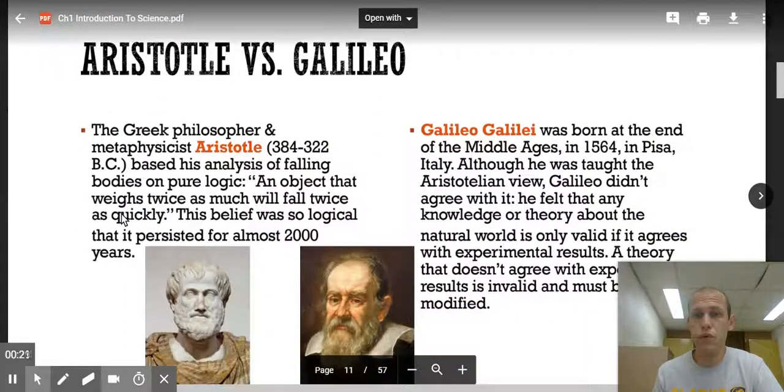Before we get into the scientific method, a little background on two people, Aristotle and Galileo. Aristotle was a Greek philosopher and metaphysicist, someone who studied the tiny workings of things, the most basic workings of the world. His analysis was based on only logic. If it made sense logically, then you hold it to be true. So if something is twice as big, then it falls twice as fast. Seems logical. That held for 2,000 years, that way of thinking.